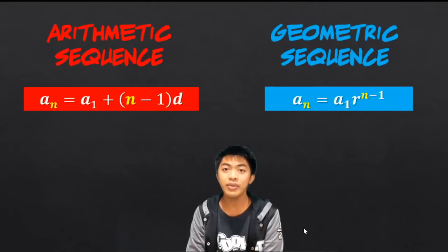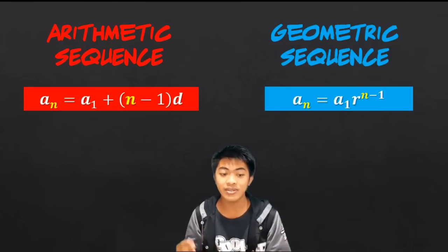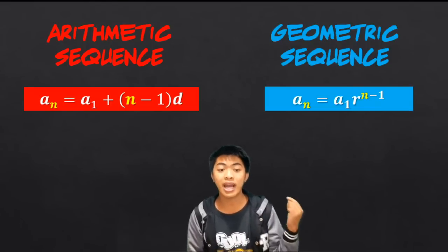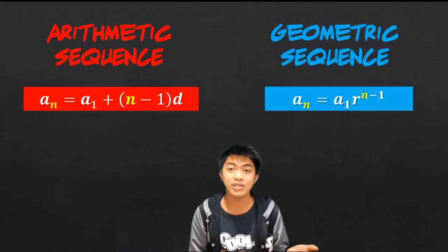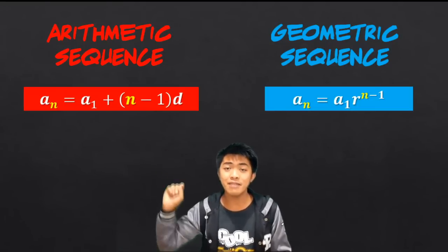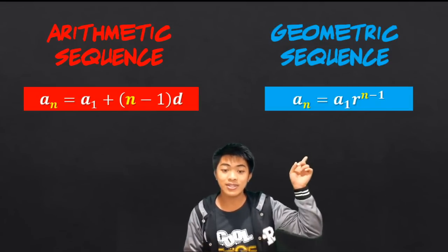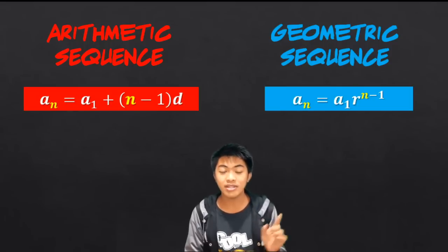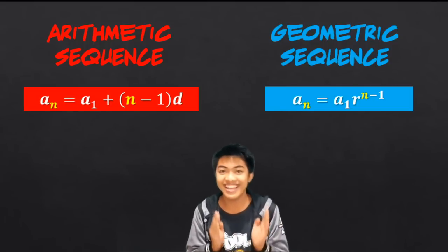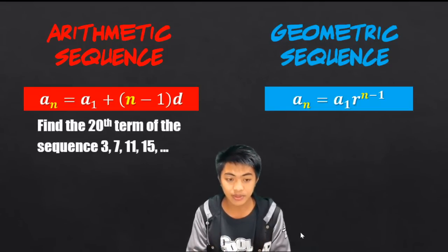We have two different formulas for us to get any term of a given sequence. Of course, if an arithmetic sequence is involved, you use one formula. If a geometric sequence is involved, you use the other formula. The longer formula is the formula for the arithmetic sequence.